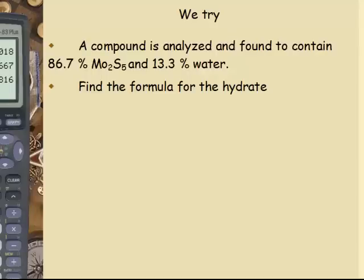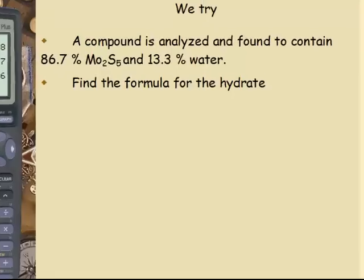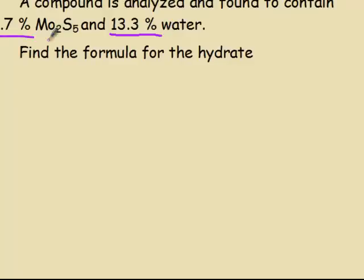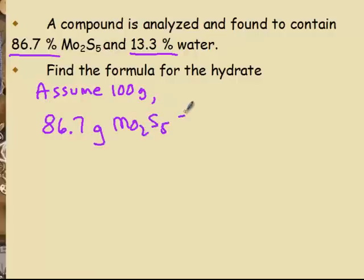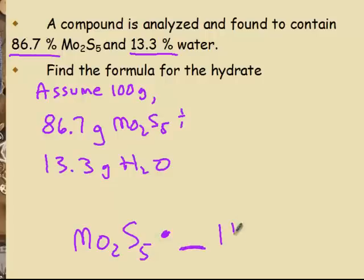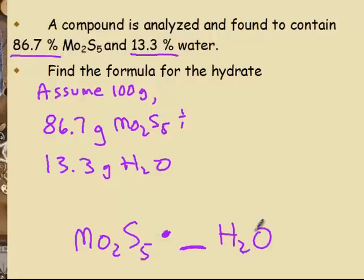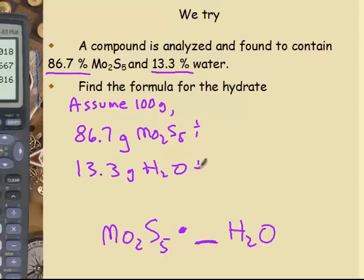What about percents? We've been doing a lot with percents, percent of oxygen in a compound, or percent of elements in finding the empirical formula. We can do the same thing with hydrates. We have 13.3% water, 86.7% Mo2S5, molybdenum 5 sulfide. My first step whenever I have percents is assume I have 100 grams. That gives me 86.7 grams of the molybdenum compound and 13.3 grams of water. We are looking for Mo2S5 dot how many water molecules by finding a mole ratio.